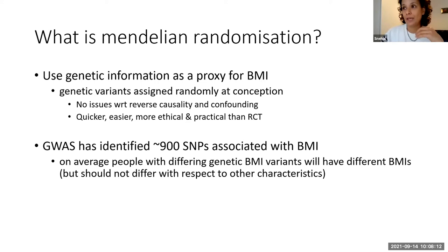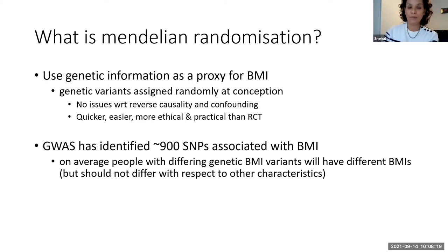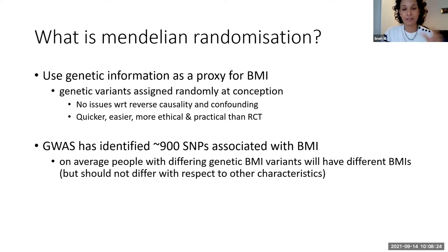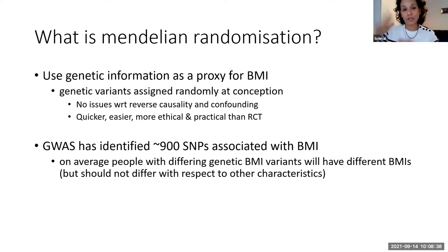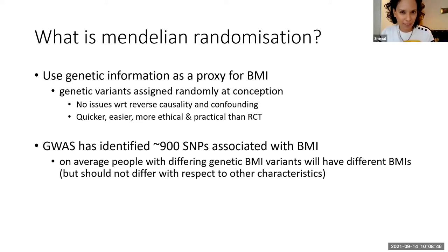When it comes to BMI in particular, a GWAS — genome-wide association study — the most recent GWAS have identified about 900 SNPs that are associated with BMI. What that means is that on average, people who have these differing genetic BMI variants will have different BMIs, but they would not differ with respect to other characteristics like smoking and physical activity.